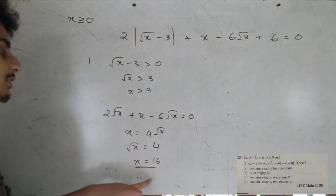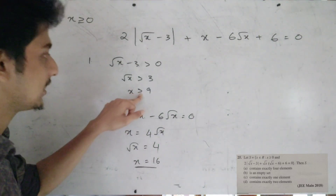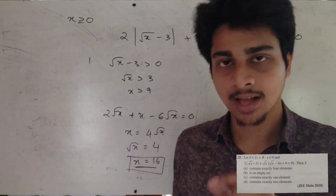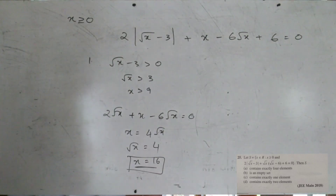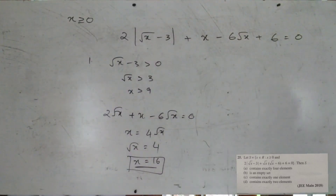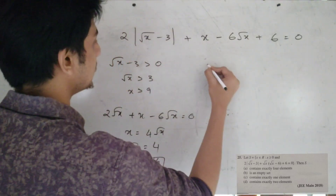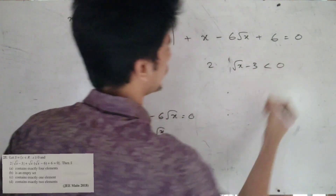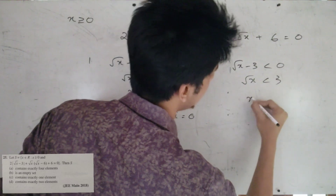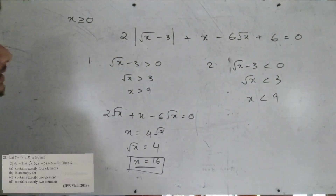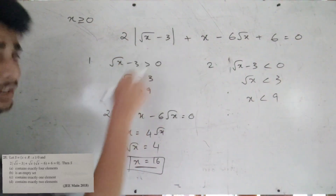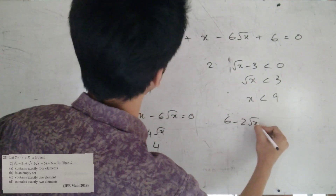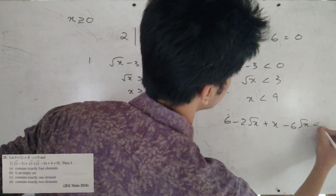This is satisfied because x is greater than 9. Then x equals 10 — it's a valid point in our set. So now we have one element in our set. The equation reduces to x − 8√x + 6 equal to 0.